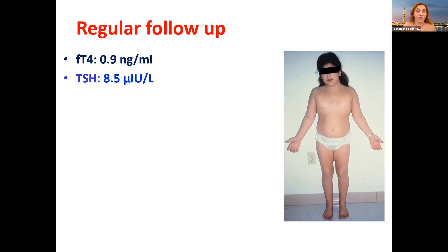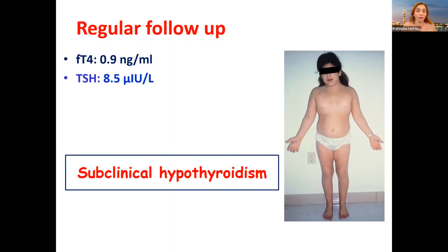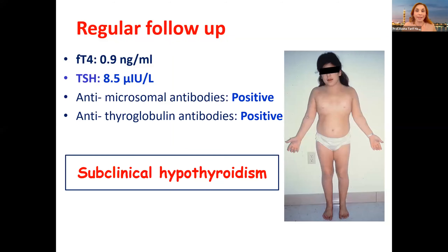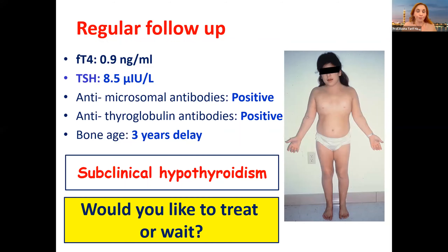But now the TSH was very high, she has subclinical hypothyroidism with positive antibodies, and the bone age is even more delayed — three years more than before. At this point, would you like to treat or wait?